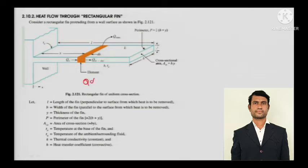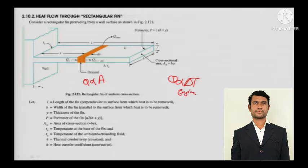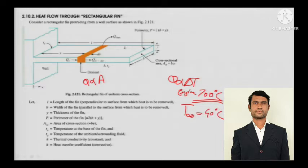Q is directly proportional to area, and Q is also directly proportional to delta T. This delta T you cannot change — for example, if you have an engine combusting at around 700°C and the ambient temperature is 40°C, you cannot change either the ambient temperature or the internal combustion temperature. So you have no control on delta T.